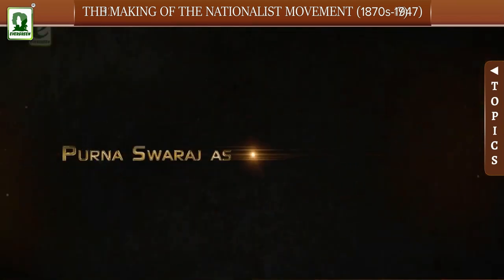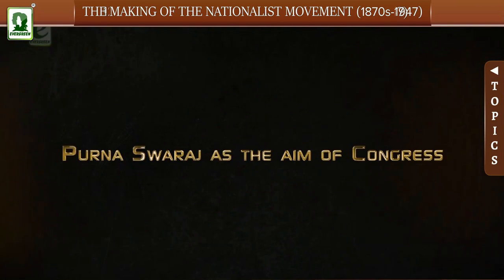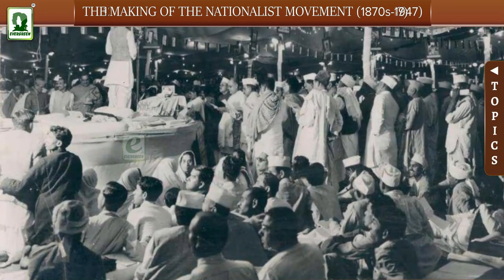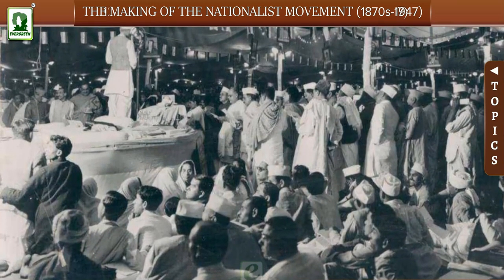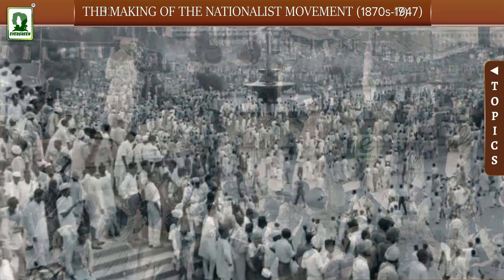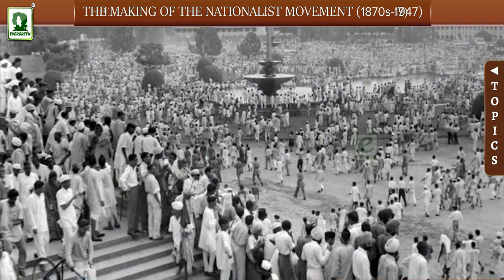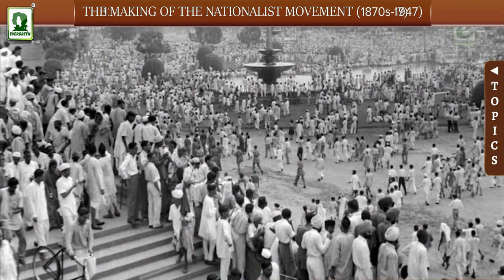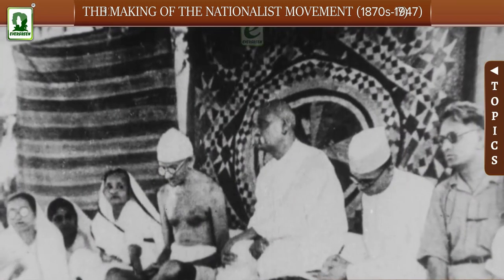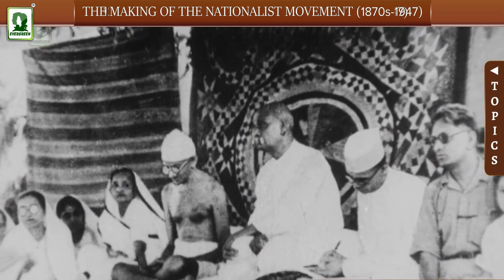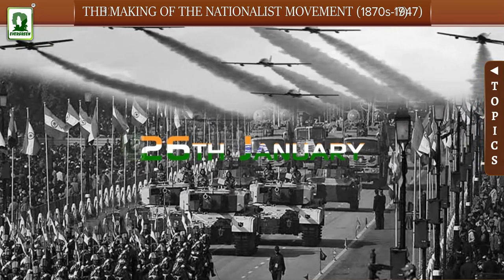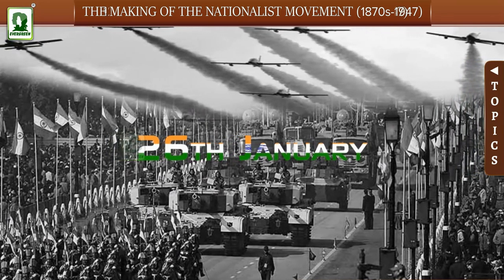Purna Swaraj as the Aim of Congress: In December 1929, the annual session of the Congress was held in Lahore under the Presidentship of Jawaharlal Nehru. In this session, the Congress declared Purna Swaraj, or complete independence, as its ultimate goal. It was decided to launch the Civil Disobedience Movement and to observe 26th January every year as Independence Day all over the country.